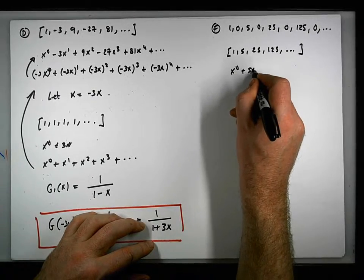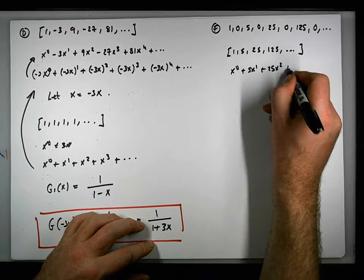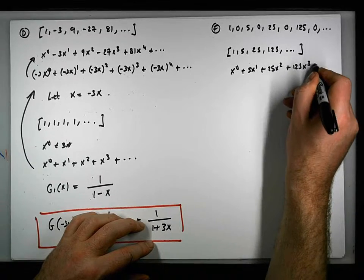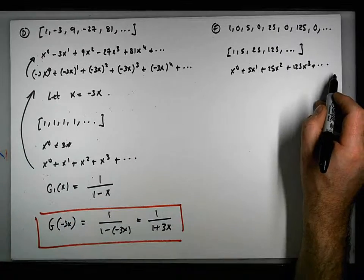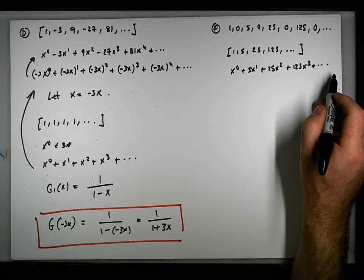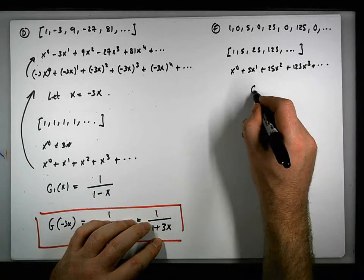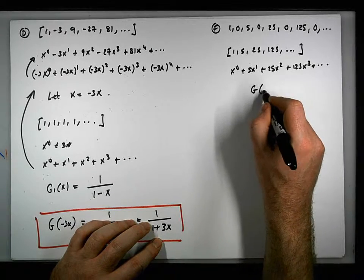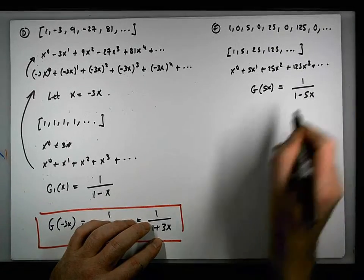The sequence is x to the 0 plus 5x to the 1 plus 25x squared plus 125x cubed, and its generating function — let's call it g₅(x) — was 1 over 1 minus 5x.